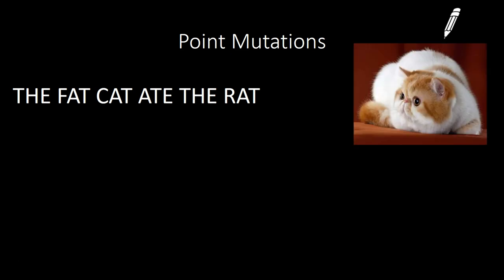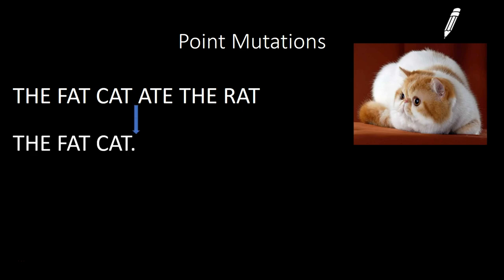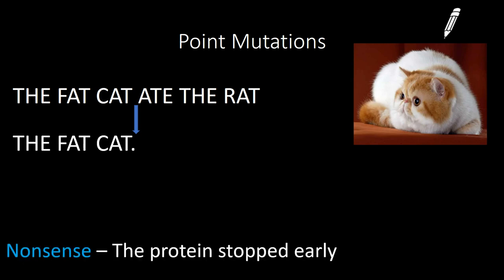If I say 'the fat cat ate the rat' and the mutation causes it to read 'the fat cat' and then it stops, that would be a nonsense mutation — the protein stopped early and never finished being made. So those are the three types of point mutations.